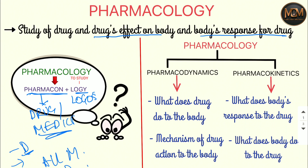Now let's talk about the branches of pharmacology. There are two branches: the first one is pharmacodynamics and the second one is pharmacokinetics.